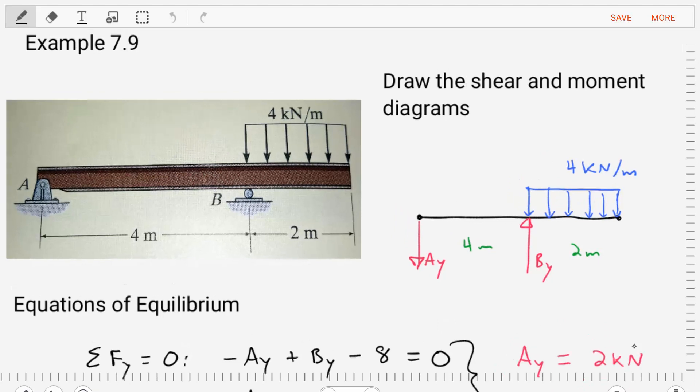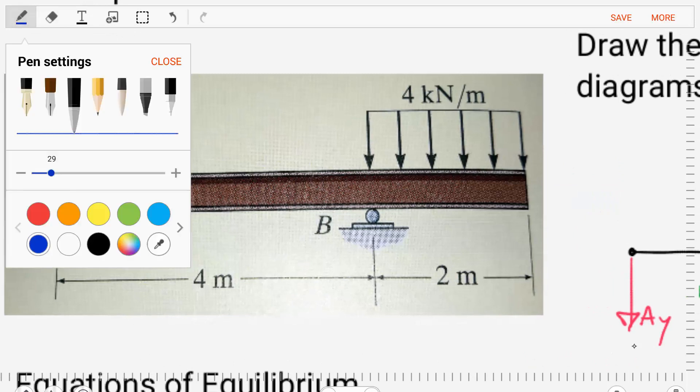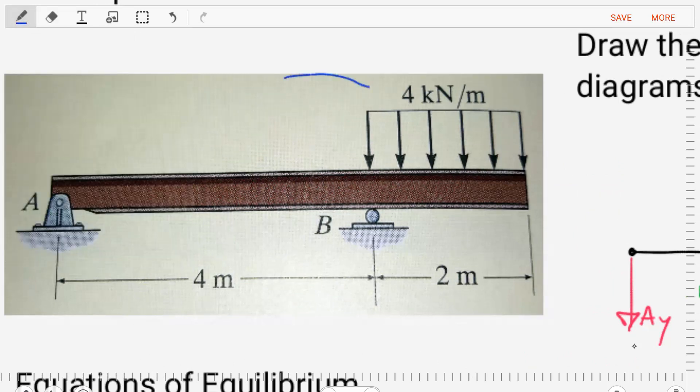In this example, we're asked to draw the shear and moment diagrams for the given beam. Let's analyze the beam. The beam has a distributed load of 4 kN per meter applied to it from point B to the end of the beam. We're given the dimensions of our beam, and we can see that we have a support at A and a support at B that we need to replace.